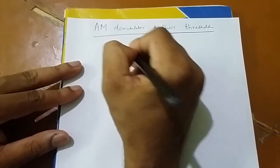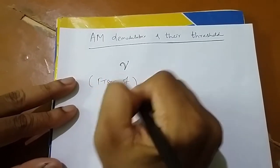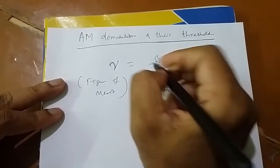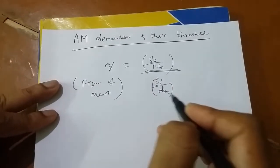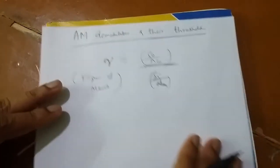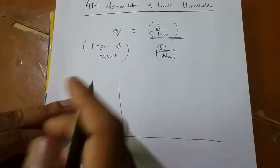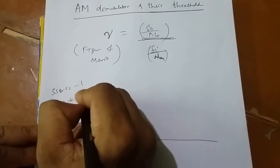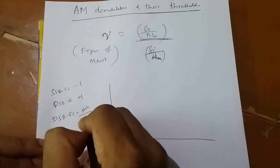Recalling the figure of merit: gamma equals output SNR divided by input SNR. For SSBSC it is 1, for DSBSC it is 1, and for double sideband with full carrier it is m²/(2 + m²).